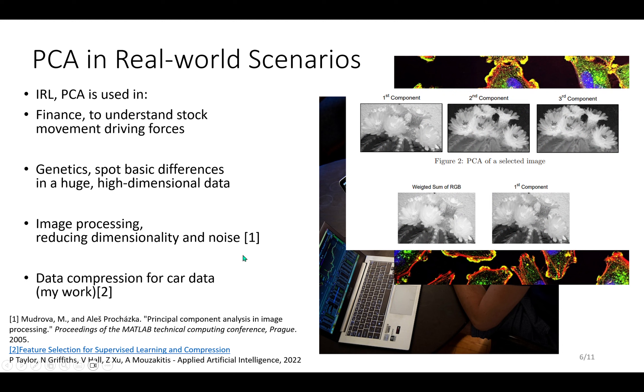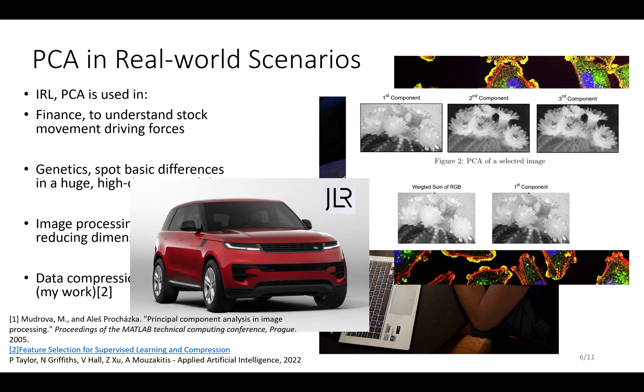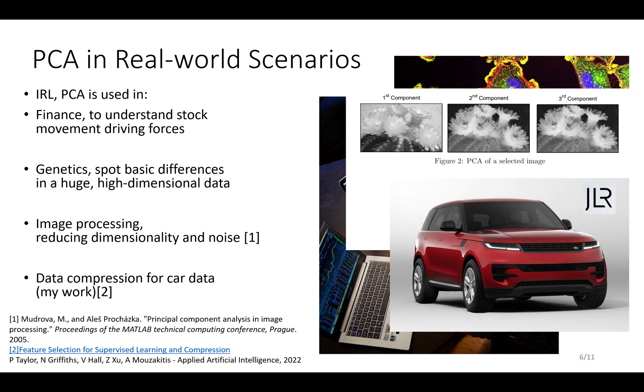Image processing, here's an example from a paper using principal component analysis in image processing. From my own work, I work with Jaguar Land Rover. We used it for data compression. Jaguar Land Rover just had vastly too much data to handle in the cars. Data compression like principal component analysis made that much easier to store and transfer to another machine.